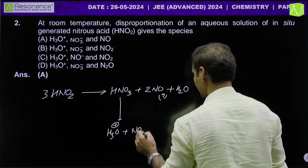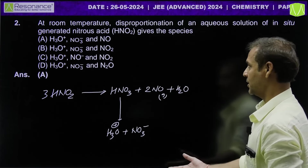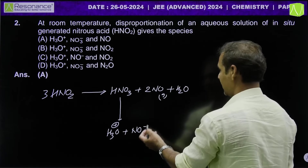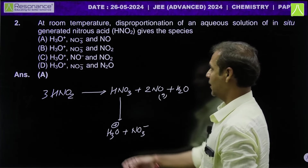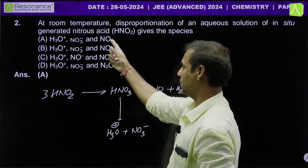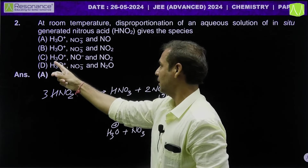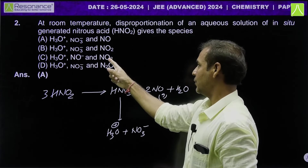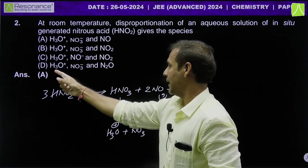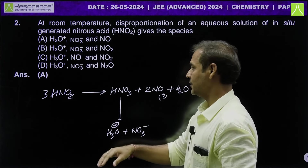If we look at the options: option A has H3O plus, nitrate ion, and NO (nitric oxide). In option B, there is nitrogen dioxide, which is wrong. In option C, there is nitrogen dioxide and NO minus — also wrong. Option D has H3O plus, nitrate ion, and nitrous oxide. So the answer is A.